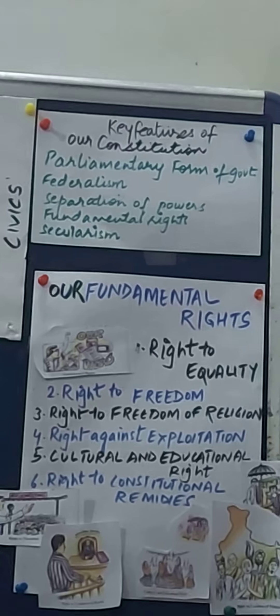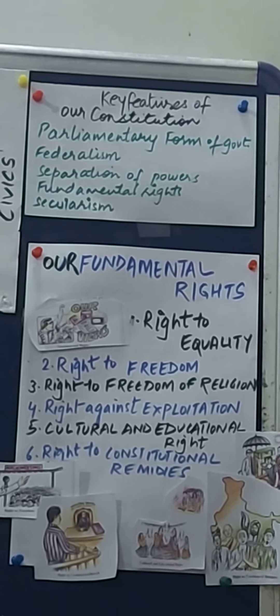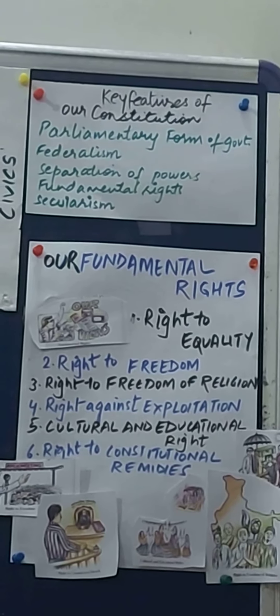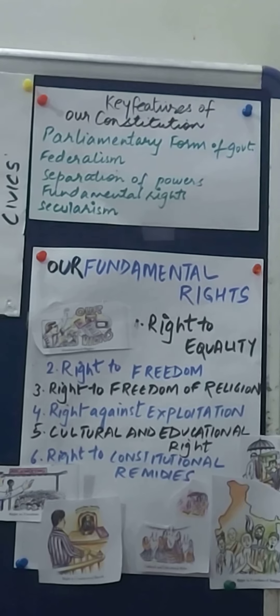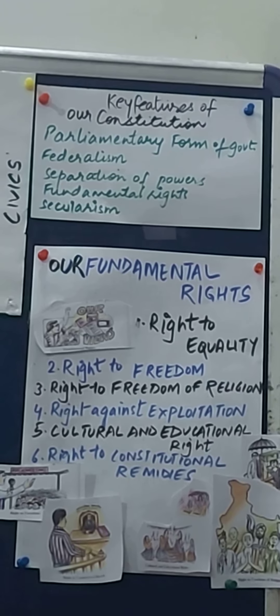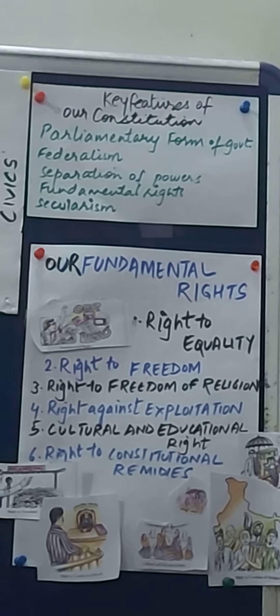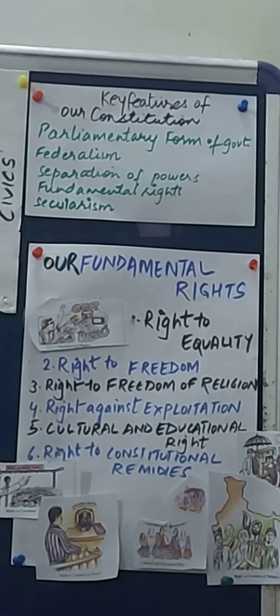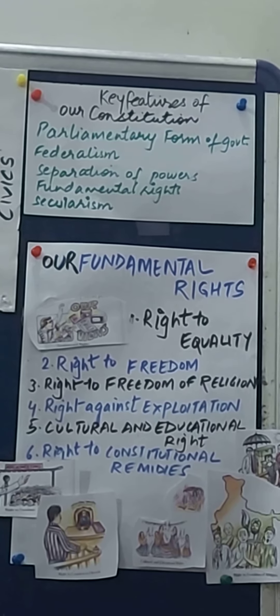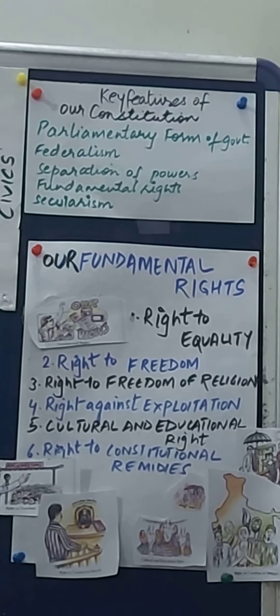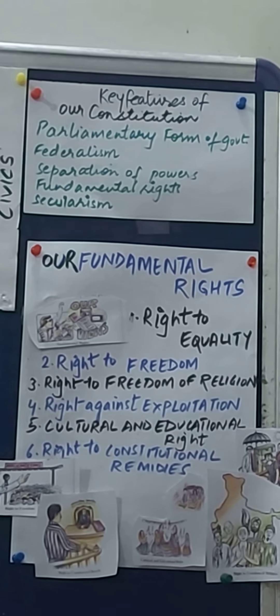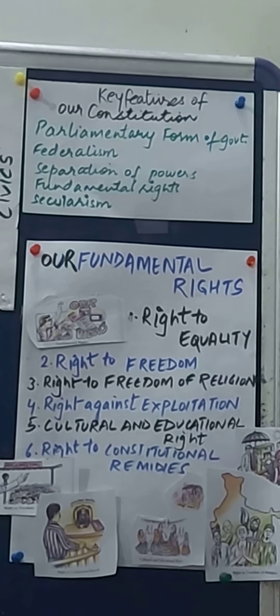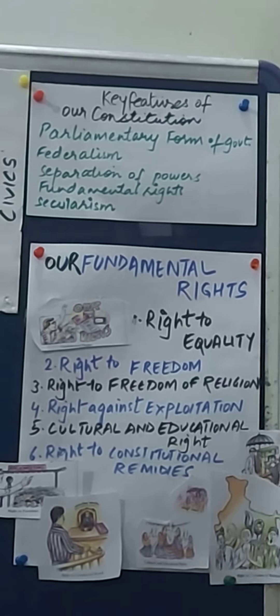Moving on to the key features of our constitution — our constitution has a parliamentary form of government. This parliamentary form of government tells us that the constitution provides for the parliamentary form at the centre and in the states.